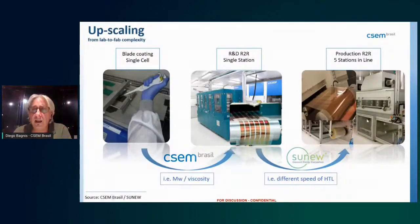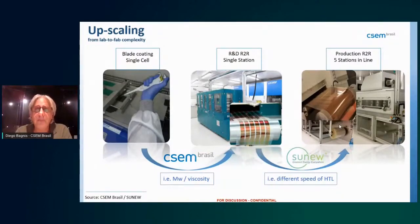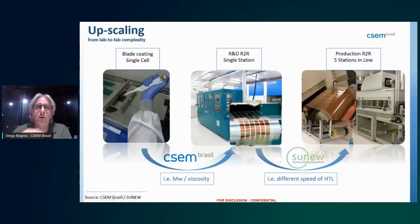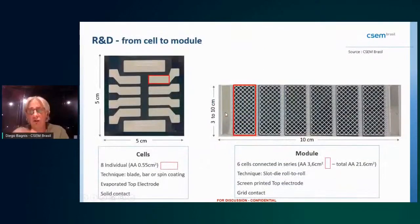For our spin-off SunNew, the production line has five stations — one for each layer — so that the entire stack is coated in one continuous line and the panel is ready for encapsulation. In single-station R&D, you can adjust the time, speed, and temperature for each layer independently. For the production line everything runs at the same speed, so you sometimes need to go back to the R&D side to find the right recipe.